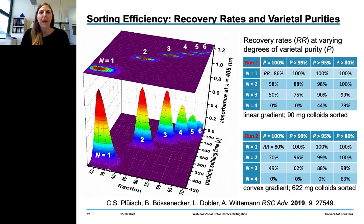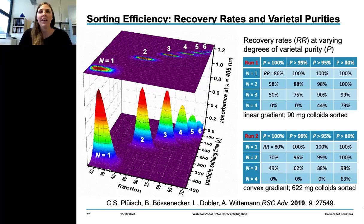At the moment, we can achieve more than 600 milligrams of colloidal molecules sorted. However, the actual bottleneck is not the zonal rotor — which would allow for higher capacity, probably two grams or even more — but rather the preparation of our colloidal molecules. We need further improvement in upscaling our approach.